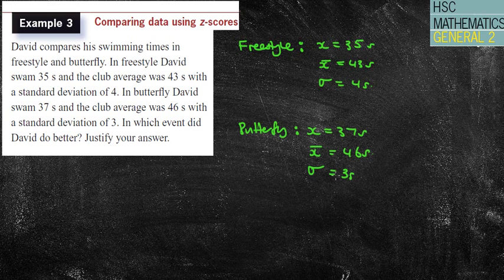And it says there, which event did he do better in? Looking at face value, we're looking at probably 37 seconds being the worst one, because obviously the quicker you finish the race, the better it's going to be. So I would think at the moment 35 seconds for freestyle.